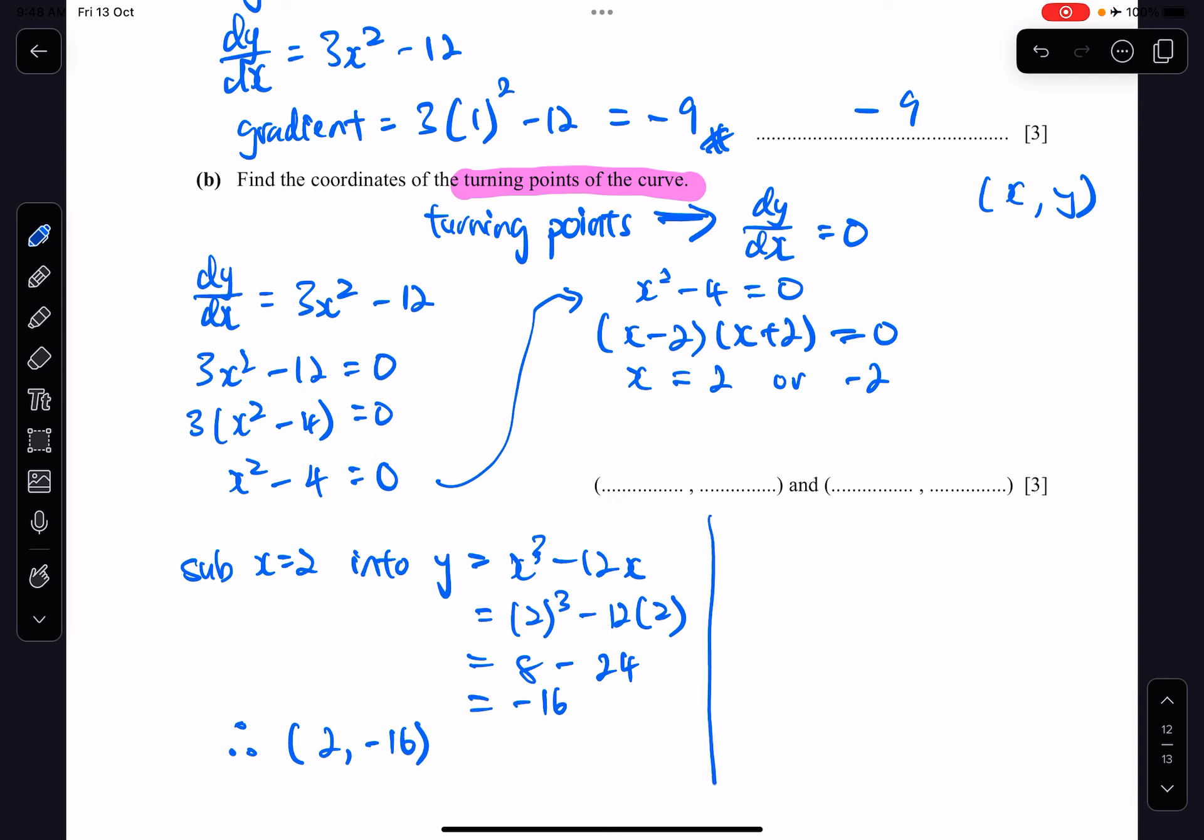So for the second point, I will have to substitute x equals to negative 2 into y. So I'll have y is equals to negative 2 cubed minus 12 negative 2. So this will be negative 8 plus 24, which will be 16. So therefore, my second turning point will be negative 2 comma 16. So these 2 will be my answer.